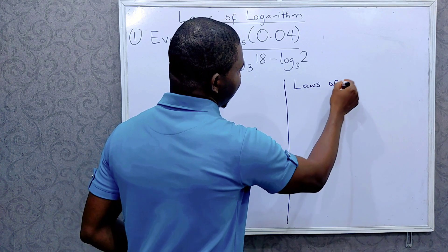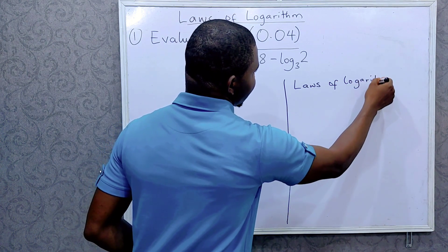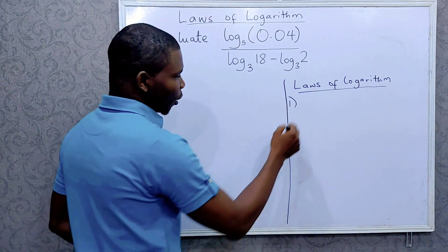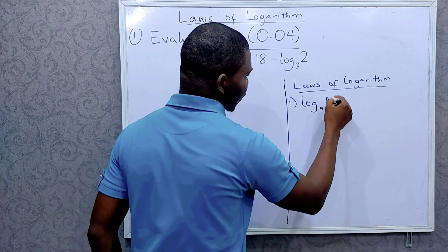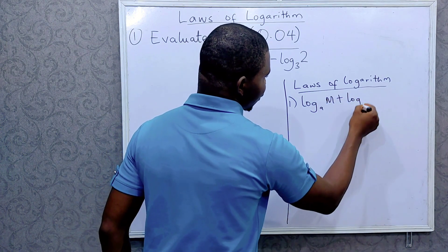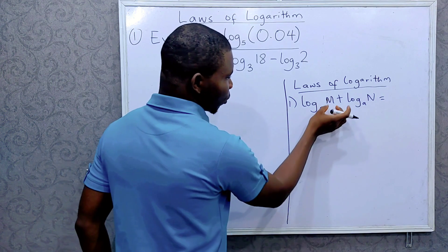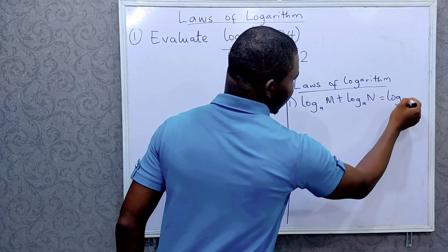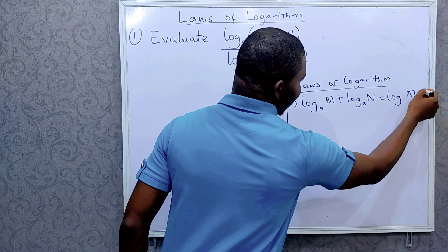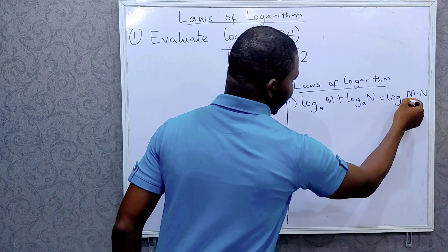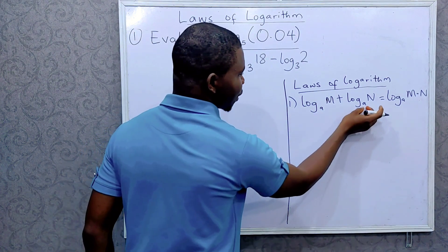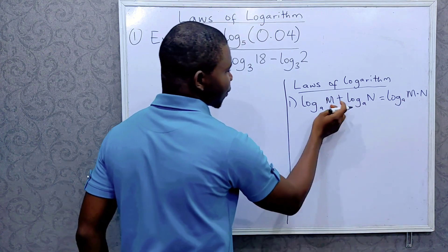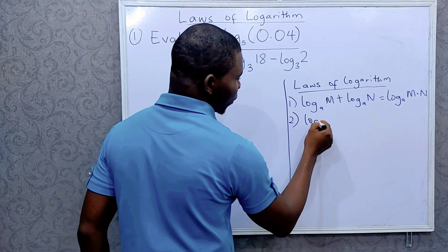The first law: when we have logarithm of the same base added together, we simply multiply the arguments. So this will be log base a of m multiplied by n. When you have logarithm of the same base added together, you simply multiply the arguments.